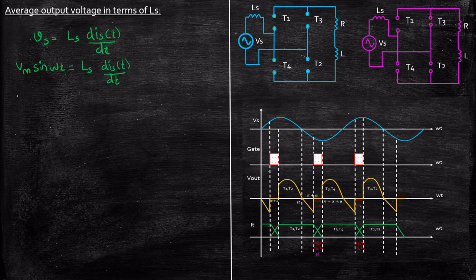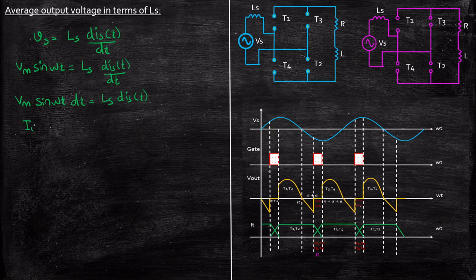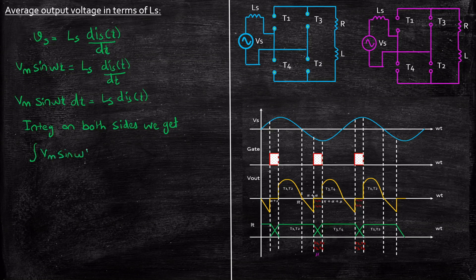Now we can rearrange: Vm sin(omega t) dt = Ls * dIs(t). We will be integrating both sides. Integration of Vm sin(omega t) d(omega t) equals integration of Ls dIs(t). Carefully observe — the left side integration is with respect to d(omega t) and the right side integration is with respect to dIs(t), that is the source current. So what are the upper and lower limits for these two terms is what we have to understand.